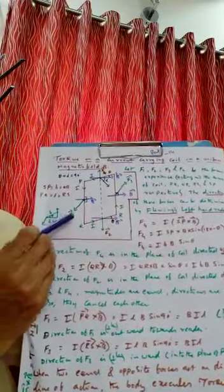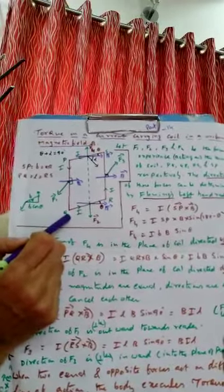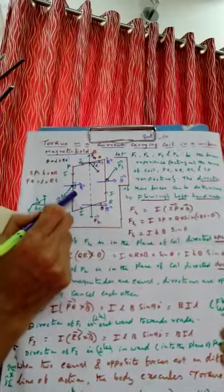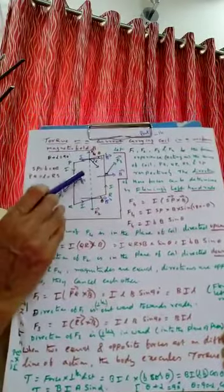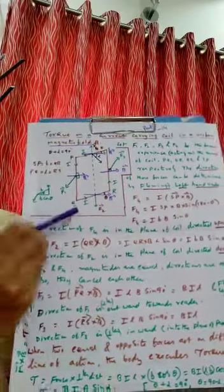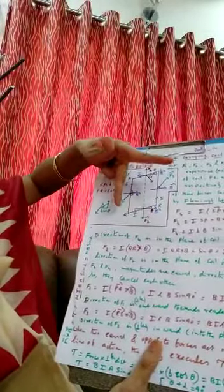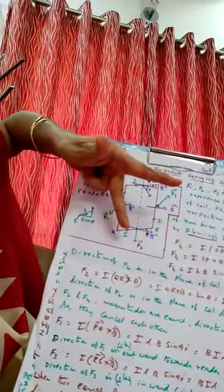Now, F1 is the force experienced by arm PQ carrying current I placed in magnetic field B. F1 = I × PQ × B = I·L·B·sin90°, because the angle between B and PQ is 90°. Since sin90° = 1, F1 = ILB. The direction, by Fleming's left hand rule, is outward — towards you.